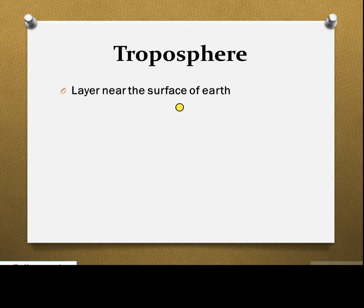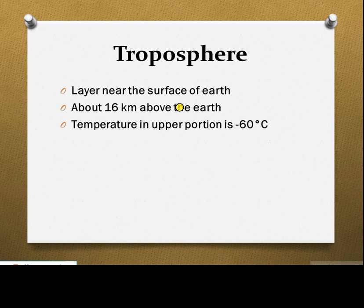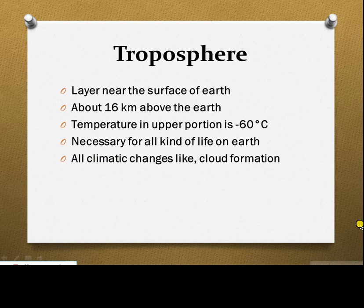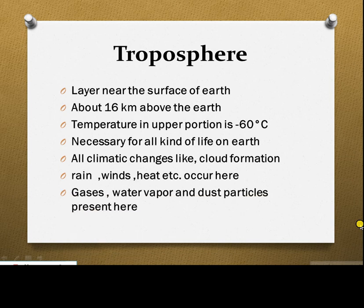The layer near the surface of Earth is called the troposphere. It is about 16 kilometers above the Earth from sea level. The temperature in the upper portion of the troposphere is minus 60 degrees centigrade. This layer is necessary for all kinds of life on Earth. Almost all forms of life are present in the troposphere. All climatic changes like cloud formation, rain, winds, and heat occur here. The gases, water vapors, and dust particles are also present in this layer.